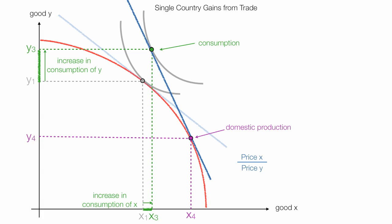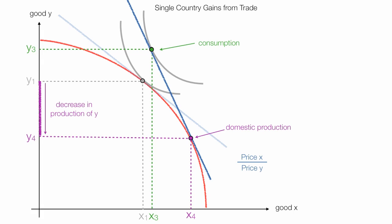It's worth noting that the country will have a large decrease in production of good Y — so if you're working in that industry, you will be hurt. That's the bottom line. And it will increase its production of good X, so if you're in that industry, you'll benefit. So: decrease in production of good Y and increase in production of good X.